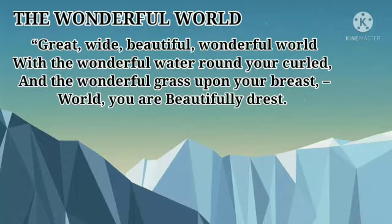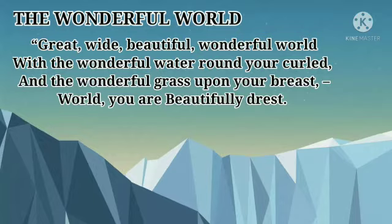Let's read out the first stanza lines: 'Great, white, beautiful, wonderful world, with the wonderful water round your car, and the wonderful grass upon your breast. World, you are beautifully dressed.' In the first stanza, the poet described the world as a very beautiful place with water and grasses on it. Therefore, he says that the world is very beautifully dressed.